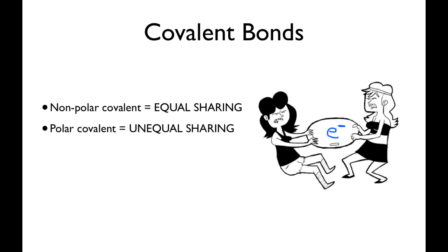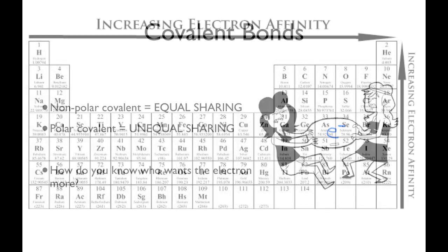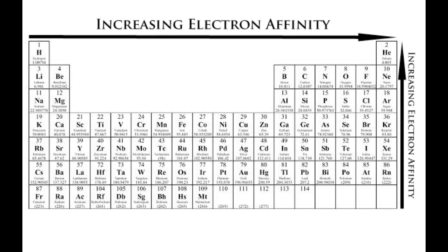Sometimes one atom has a stronger pull. It wants the electrons more than the other. So the electrons will kind of play favorites because one atom is so much more desirable than another. How do you know who wants the electron more? How can you predict that? How would you ever know such a thing? Oh my God, it's on the periodic table.